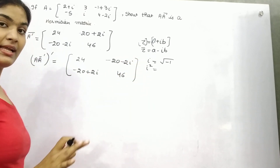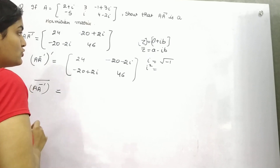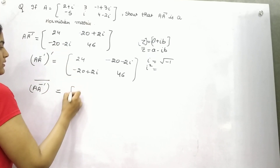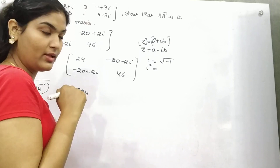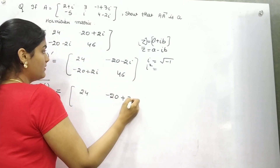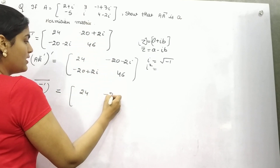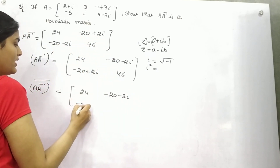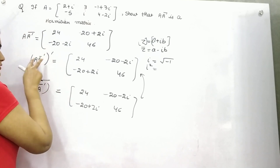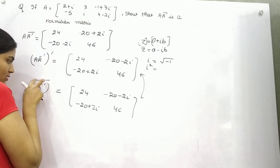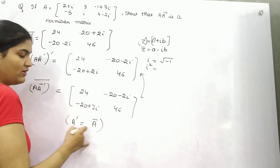Is it correct? Then after, you have to find out the conjugate of this matrix. If you find out the conjugate, in order to do so, change the sign of the imaginary part. So minus 20 plus 2 iota becomes minus 20 minus 2 iota, and minus 20 minus 2 iota becomes minus 20 plus 2 iota, and 46 stays as 46. You can see these two are equal: the transpose of this particular matrix is equal to the conjugate of this. For any matrix A, if the transpose equals the conjugate, then that will be a Hermitian matrix.